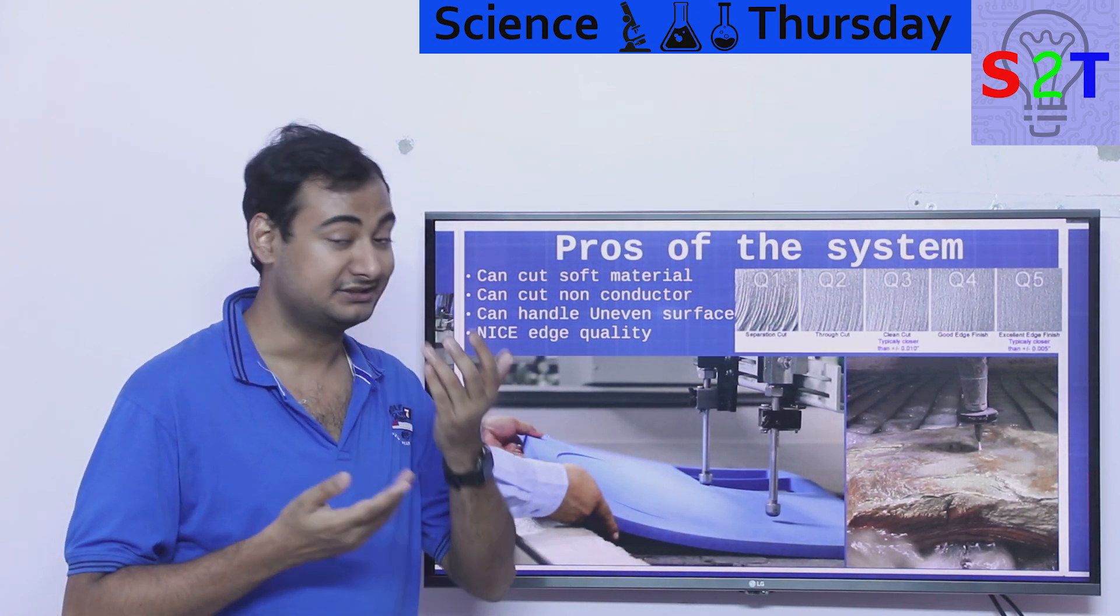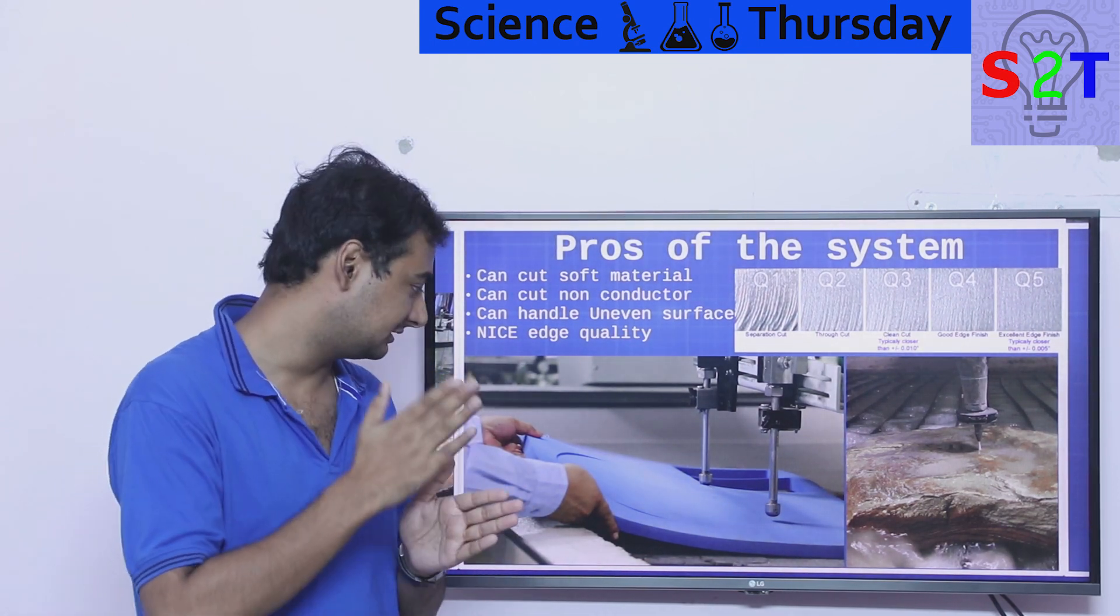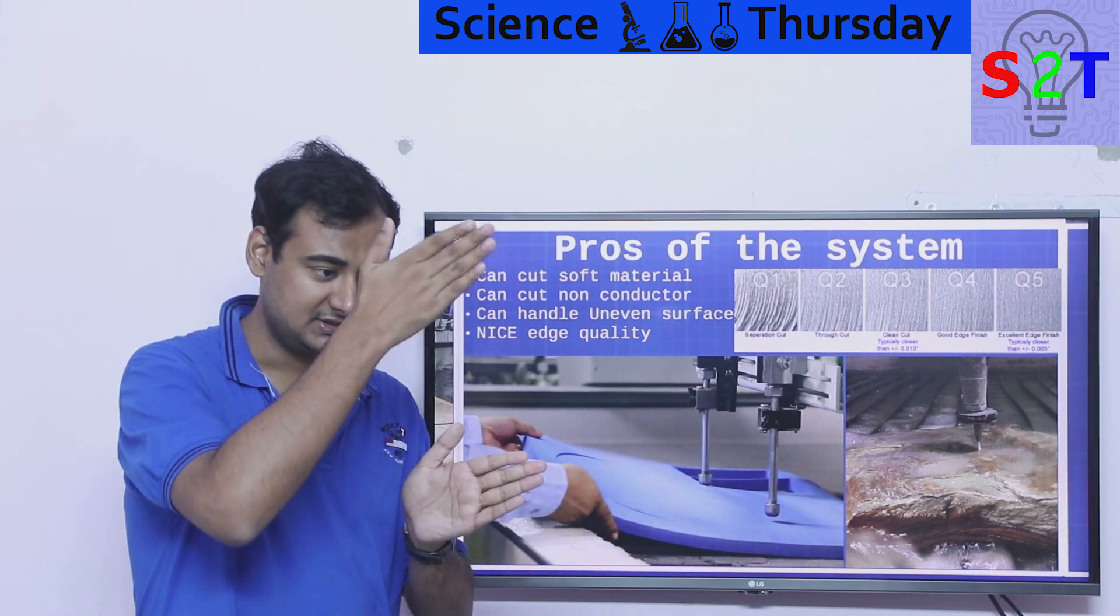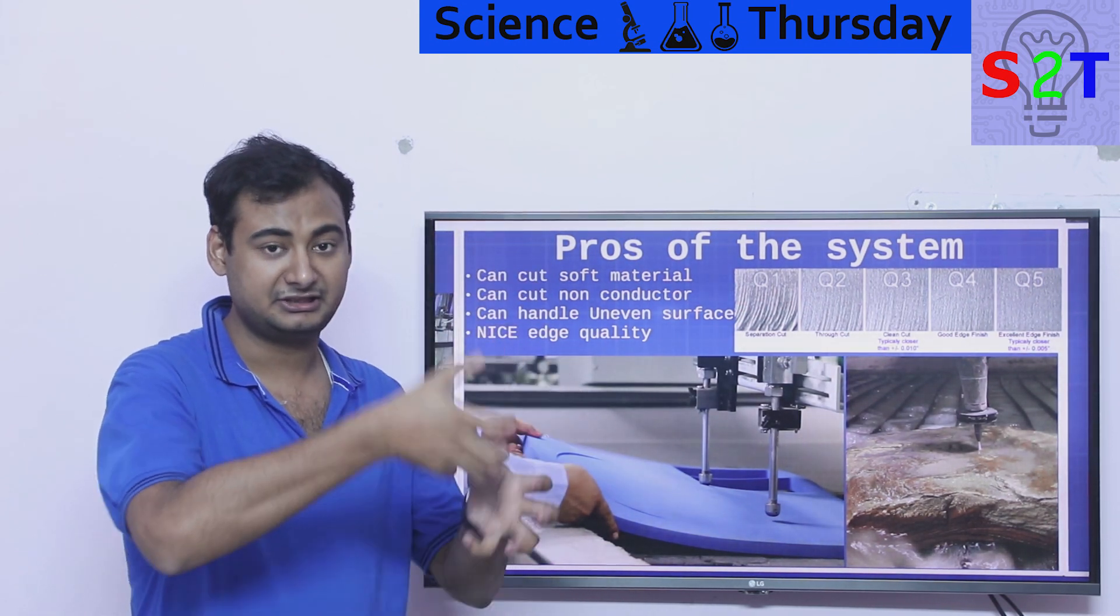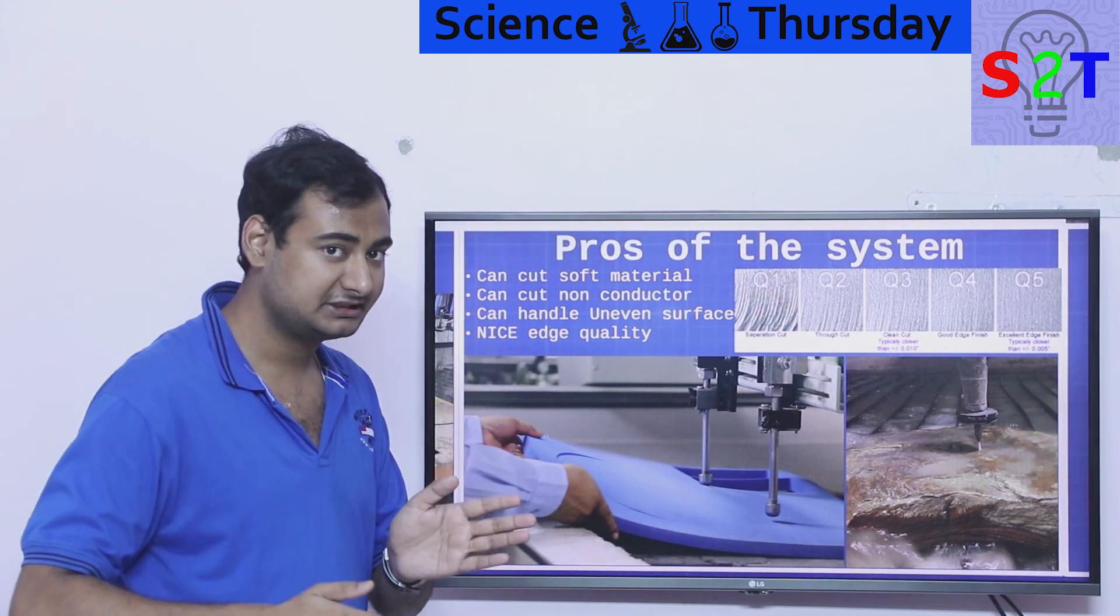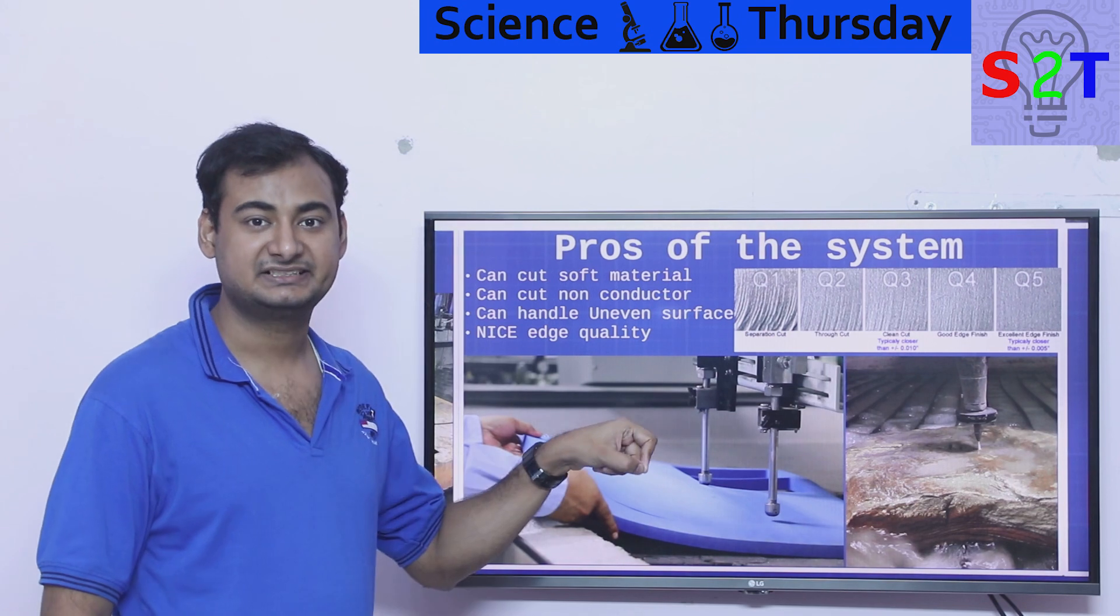You can't use plasma, and if you use CNC mill or saw which were used in earlier days, the problem is the cut quality will not be very nice because every time the saw is doing this, it will tear apart the fibers. So you will not get a clean cut.